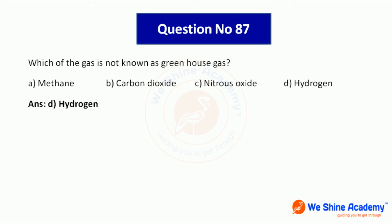Question number 87: Which of the following is not known as a greenhouse gas? Options: methane, carbon dioxide, nitrous oxide, hydrogen. Methane, carbon dioxide, and nitrous oxide are greenhouse gases. Hydrogen is not a greenhouse gas.